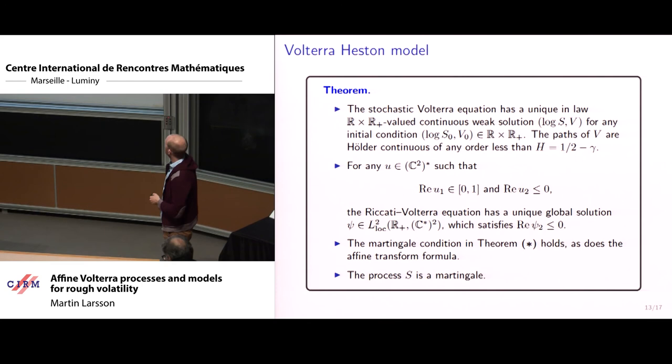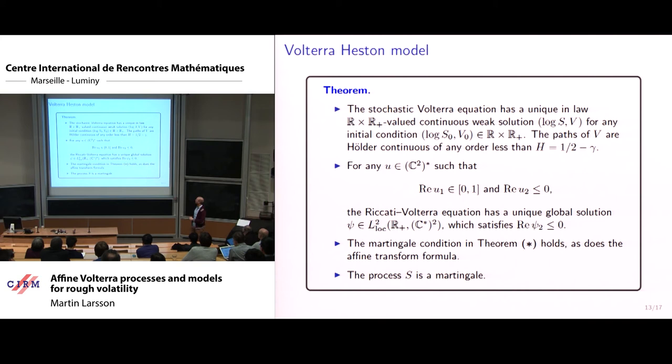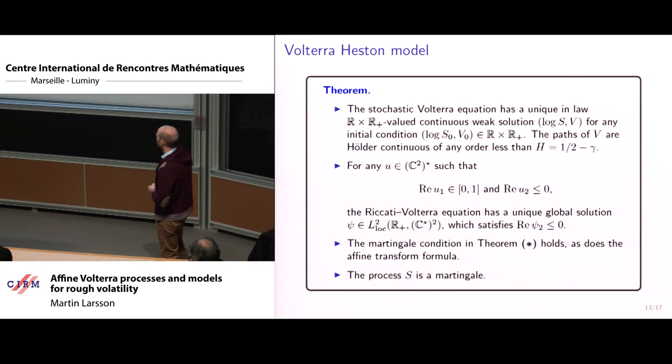So I want to say something about the Volterra-Heston model because that is the one where we started with. Here the dynamics is exactly as in the rough Heston model, except that we have perhaps a more general kernel. The Riccati-Volterra equation in this case looks rather simple. And we're going to make an assumption on the kernel, which is that it's completely monotone and has some controlled behavior close to zero. So this just means essentially that K could be singular, but it has some controlled rate, okay? So in this case, what our theorem says is that we do have unique in law weak solutions of the stochastic equation for any initial condition. The paths of the squared volatility process have the right regularity. And also for a suitable class of initial conditions, the Riccati-Volterra equations have unique global solutions. Furthermore, the martingale condition in our theorem is satisfied. And as a bonus here, the process is a martingale. So there are no bubbles in this model.